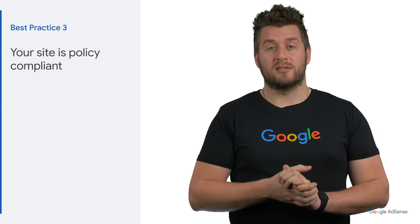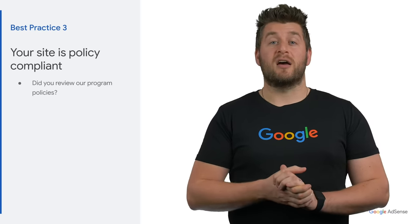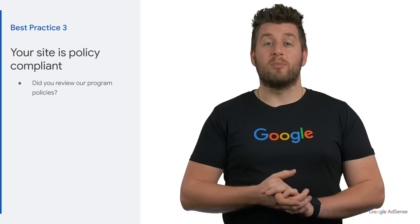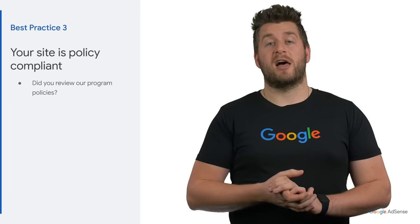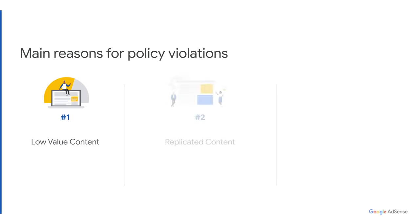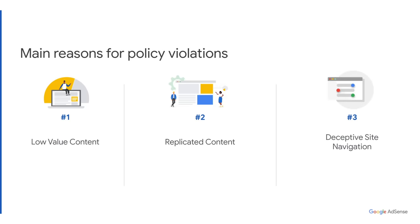The final best practice is to make sure your site is policy compliant. Please review our program policies and content policies in particular. We've observed three main violations by our publishers that we'll highlight next to help you avoid them. The first violation is low value content — make sure the content is original and valuable to your users. The second violation is having replicated content — ensure that your content is unique and not repetitive on different pages of your site. When the same content is found replicated on your pages or on other sites, your site will not be approved.